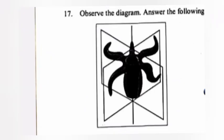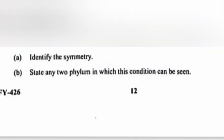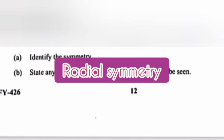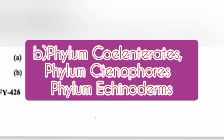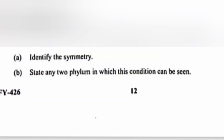Question 17. Observe the diagram and answer the following questions. A. Identify the symmetry. B. State any two phyla in which this condition can be seen. Answer: A. Radial symmetry. B. Phylum Cnidaria, Phylum Ctenophora, Phylum Echinodermata. Write any two.